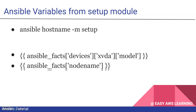We can get dynamic system data using the setup module. Using the command 'ansible hostname -m setup' it will provide all details of the specific host — including configuration, OS, memory, CPU, cores, hostname, IPs — everything is shown in one JSON output.